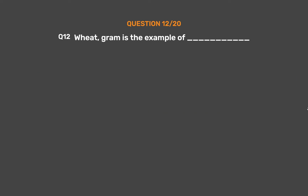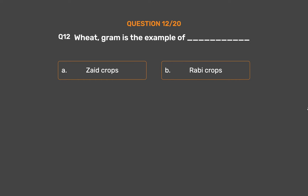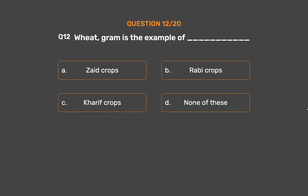Question No. 12: Wheat and gram — this is an example of ___. Option A: Zaid crops. Option B: Rabi crops. Option C: Kharif crops. Option D: None of these.